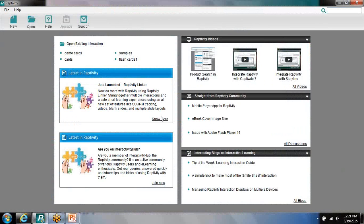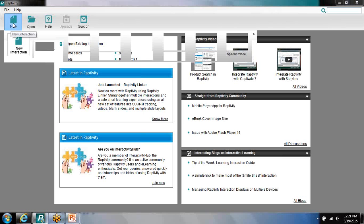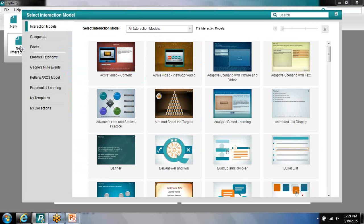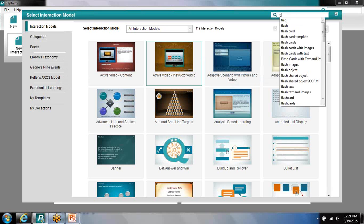So here we have our opening Raptivity screen. To create an interaction, we just simply choose New from our toolbar and select New Interaction. Now there are several ways of navigating to the template that you want to work with. Notice here on the left-hand side we can view all interaction models. We can look by category, by pack, or even from some popular instructional design theories. You can also use the search feature found in the upper right. So we're going to go ahead and type in flashcards.